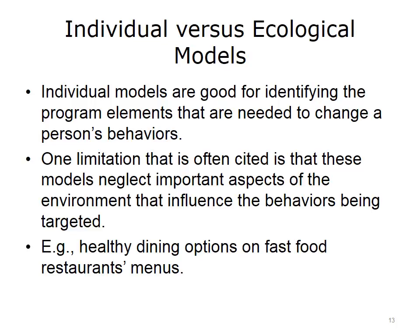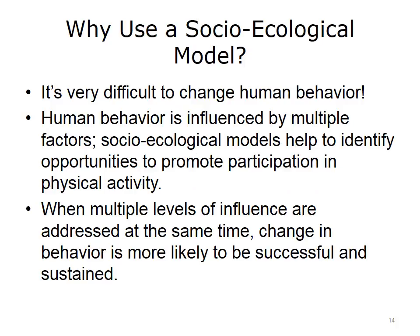The other big set of models are ecological models. These involve trying to change the operation and the environment around individuals. Individual models are good for identifying program needs to impact the individual, but you also need to consider the environment — can people actually access the things they need to improve their health? One example is putting healthy dining options on fast food restaurant menus. So why use a socio-ecological or environmental model to change behavior? Well, human behavior is difficult to change, and it takes a lot of things pushing on us — not just one typically — to make those changes happen.